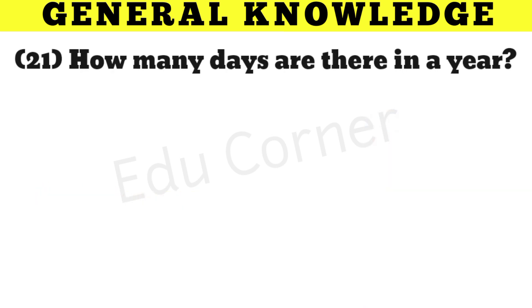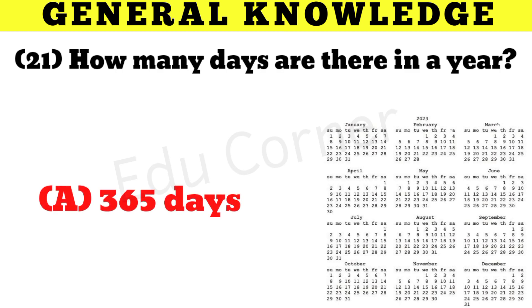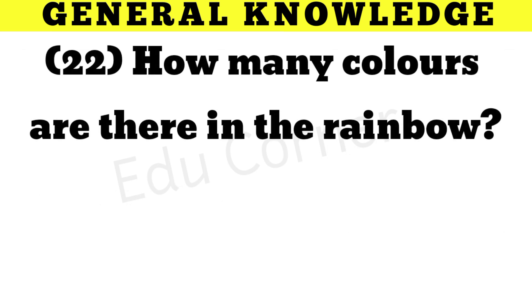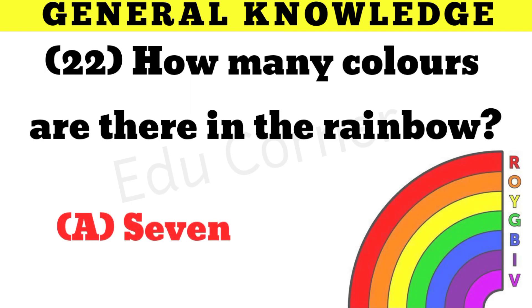How many days are there in a year? 365. How many colors are there in the rainbow? 7.